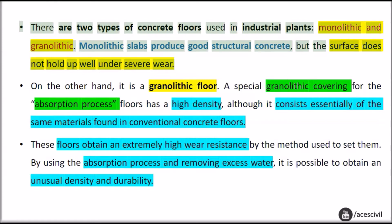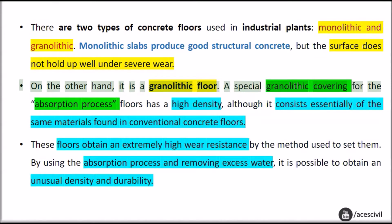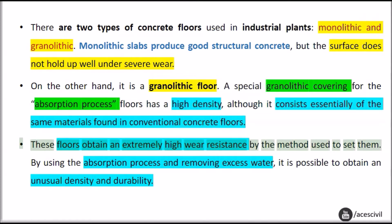Monolithic slabs produce good structural concrete, but the surface does not hold up well under severe wear. On the other hand, a granolithic floor with a special granolithic covering for the absorption process has a high density, although it consists essentially of the same materials found in conventional concrete floors. These floors obtain an extremely high wear resistance by using the absorption process and removing excess water, making it possible to obtain an unusual density and durability.